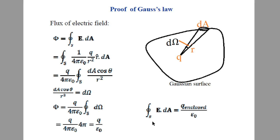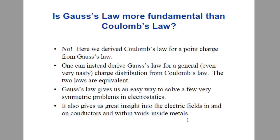So we can write ∮ E · dA = Q_enclosed / ε₀. This is the proof of Gauss's Law. From this proof we can see that Gauss's Law is always valid and always true. Gauss's Law is derived from Coulomb's Law, and the two are equivalent. But Gauss's Law will be more useful in some special cases having symmetry.